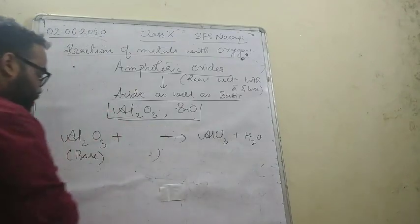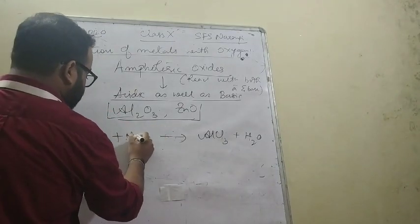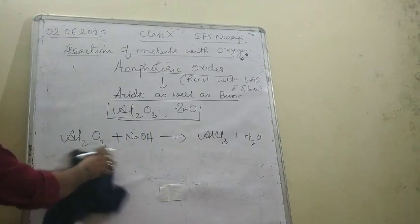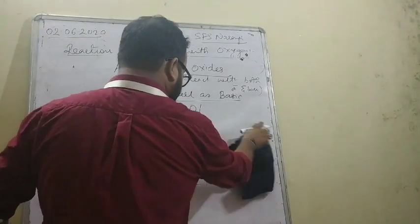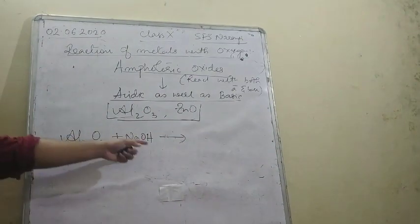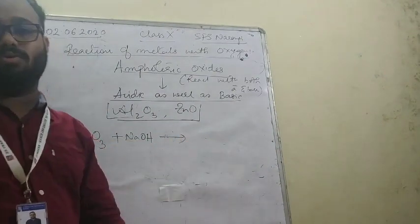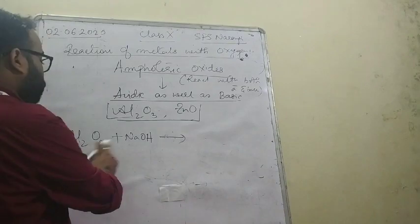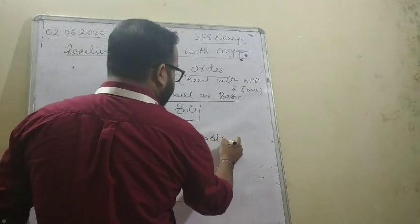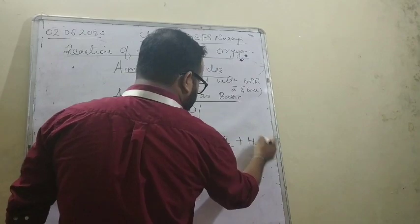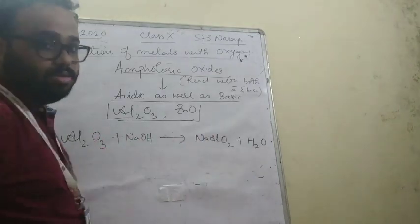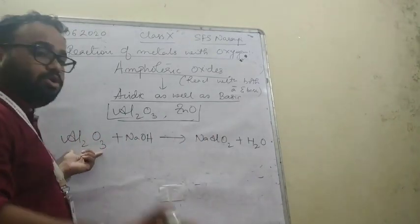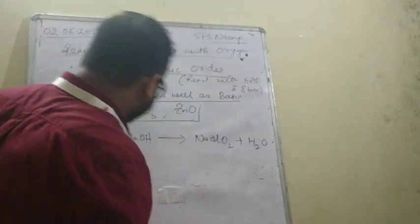Now if I replace the acid with a base — NaOH — Al₂O₃ plus NaOH will give you NaAlO₂ plus H₂O. We can balance it on our own. This product is called sodium aluminate. So Al₂O₃ is an oxide which can react with both acid and base.